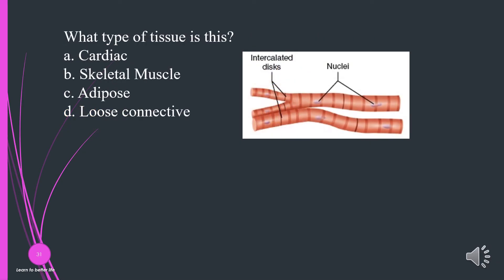What type of tissue is this? A. Cardiac. B. Skeletal muscle. C. Adipose. D. Loose connective. The answer is A, cardiac. Cardiac tissue has intercalated discs.